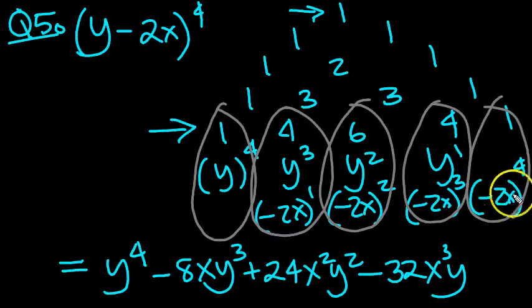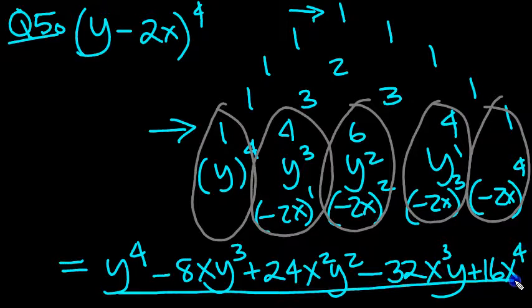Then the last term is just one lot of this. So minus 2x to the 4 is just minus 2 to the 4, which is going to be plus. And 2 to the 4 is 16. And then it's just x to the 4, isn't it? There we go. That's that one done.